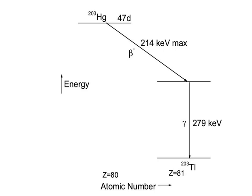This state decays very quickly (within 2.8 × 10^-10 seconds) to the ground state of 203-Tl, emitting a gamma quantum of 279 keV.